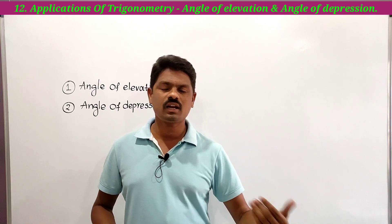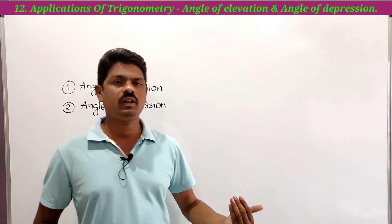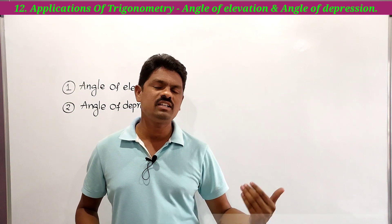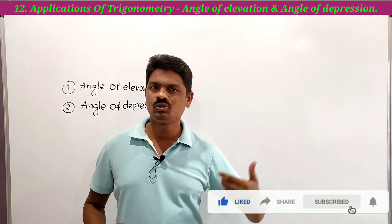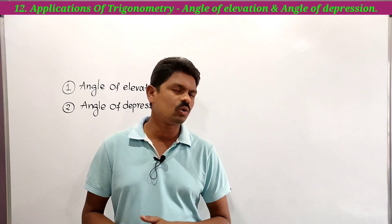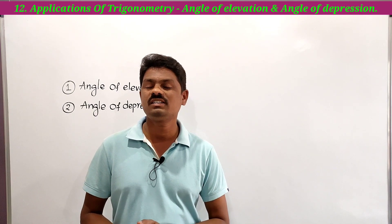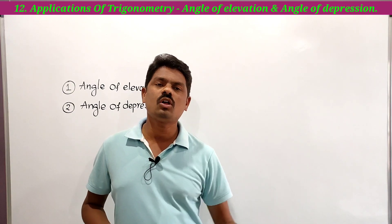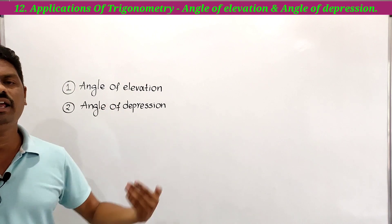To find those heights and distances, we apply trigonometric ratios — hence it is known as 'Applications of Trigonometry.' To find those heights and distances, we first have to find the angles using theodolites. We use theodolites to find the angles, then we can find those heights and distances. Before going to solve problems, we have to learn about angle of elevation and angle of depression.